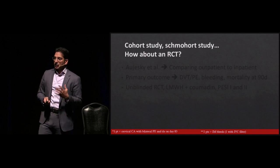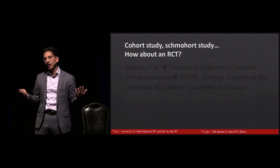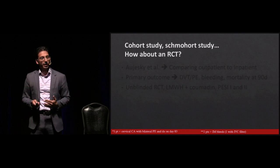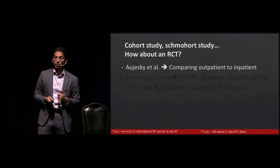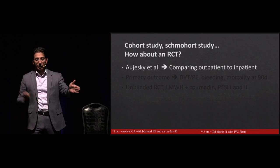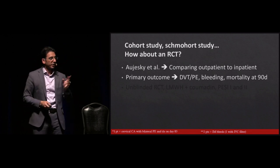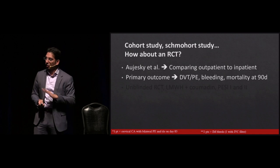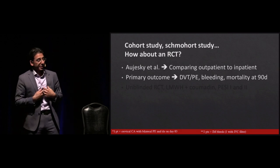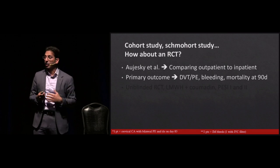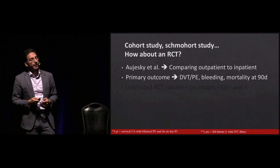That's a cohort study — you take patients with a disease and follow them. But show me a randomized controlled trial before I change my practice. Here's one: Ojeski et al. did an RCT of 344 patients, comparing outpatient to inpatient. The primary outcome was DVT/PE recurrence, bleeding, and mortality at 90 days — the same primary outcomes. Now you can compare one to the other. For ED purposes I'd prefer a 30-day outcome, but 90 days is good enough for now.